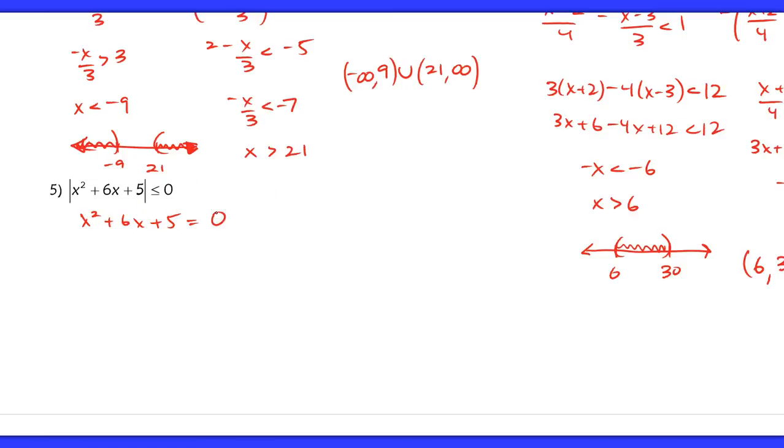So we're going to solve this as a quadratic equation. So we have x plus 5 and x plus 1 equaling 0. In other words, if x equals negative 5 or x equals negative 1, these are the only two solutions that would satisfy this absolute value inequality.